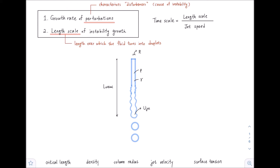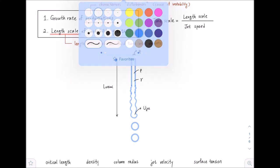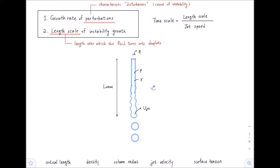You might be wondering about mu, our viscosity. We will not be considering viscous effects here in the Rayleigh-Plateau instability, because if viscous effects become dominant, we have to consider some other parameter. Here, these viscous effects are not dominant. So we will only consider these five variables: L, R, rho, gamma, and u-jet. We say that n equals 5.